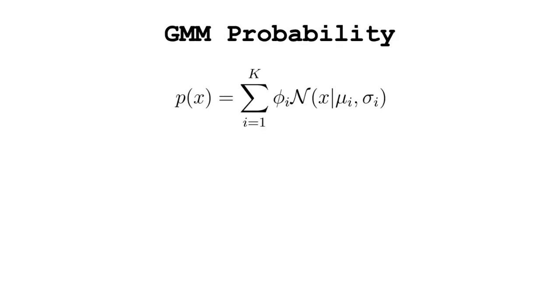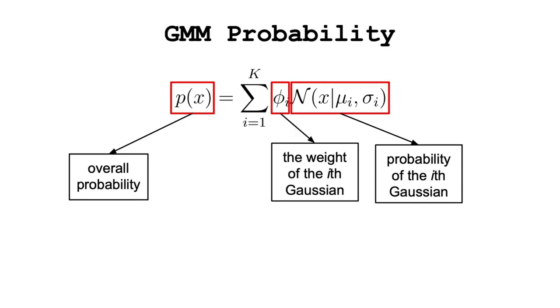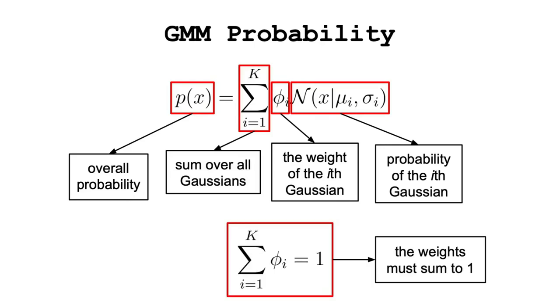And now, let's look at the mathematics of Gaussian mixture models. Simply put, the probability of sample x is equal to the weighted sum of probability that the sample has in each Gaussian.